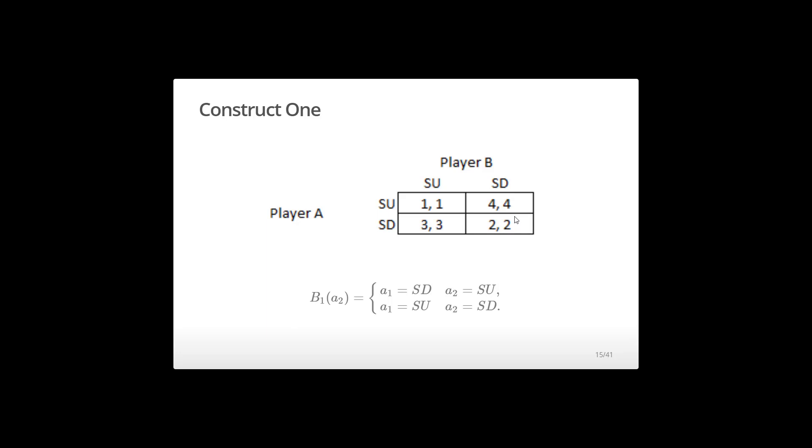Well, what if player two chooses to slow down? Now I'm over in this column. Well, I look at my payoffs in that column. Four is the biggest payoff. It comes from me playing speed up. So player two is choosing to slow down. I'm going to choose to speed up. This is my best response function. Probably the easiest function you've ever created if you don't overthink it.